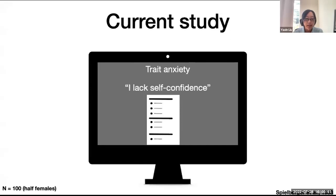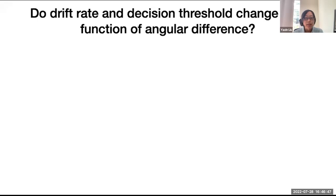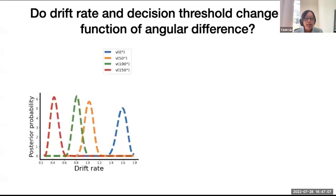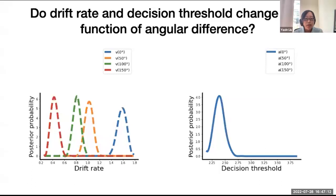Before we delve into how affective factors influence model parameters, let's look at whether the drift rate and decision threshold change as a function of angular difference from 0 to 150 degrees. As the angular difference increases, the drift rate linearly decreases, meaning that processing efficiency is slower. Decision threshold, however, appears to increase, meaning that more evidence accumulation occurs as angular difference increases.